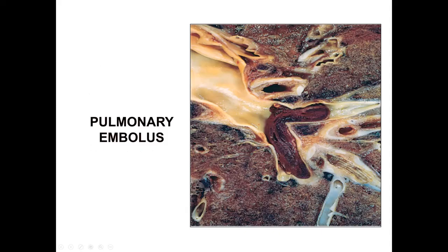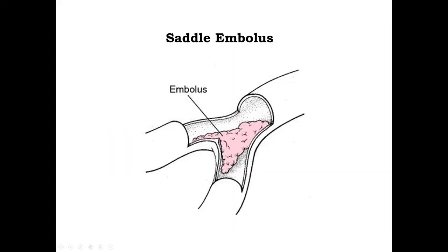In this photograph you can very well appreciate a saddle-shaped embolus present in the pulmonary vasculature. This diagram also shows the saddle-shaped embolus — it is essentially a diagram of the previous photograph.